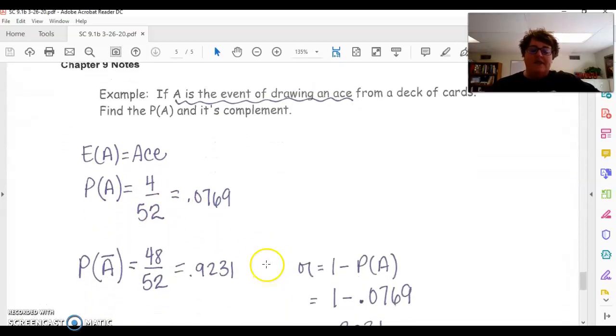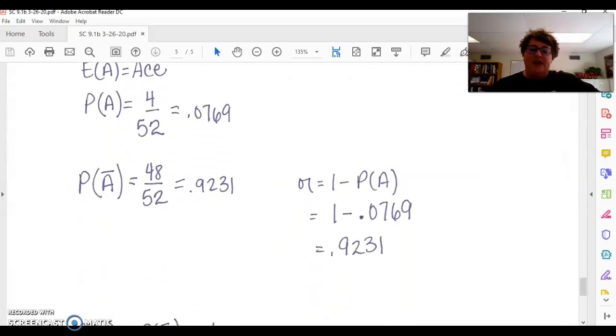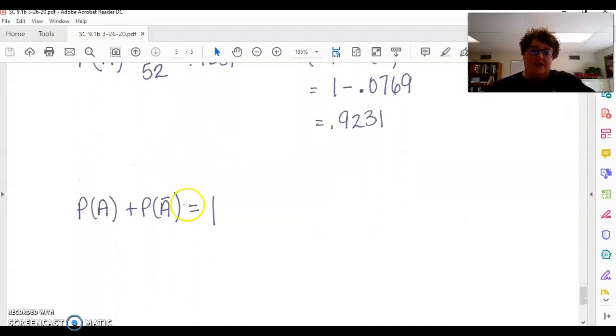Now, the complement of A, you can look at this two different ways. You can think about what's the probability of not drawing an ace? So that means I have 48 other cards I could draw out of that 52. Or you can find it by the formula, 1 minus the probability of an ace. So 1 minus 0.0769 and you get the 0.9231. And again, your probability of drawing an ace plus your probability of not drawing an ace should add up to 1.